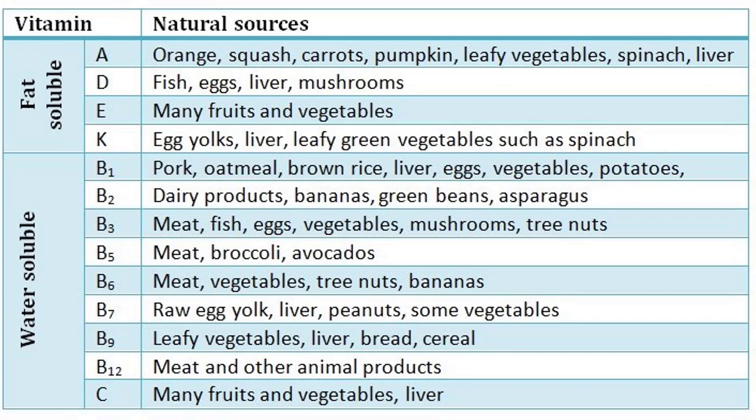Now, vitamin natural sources. It is difficult to remember everything in the table, but try to remember at least one or two sources so that you can eliminate wrong answers in the exam. Vitamin A is a fat soluble vitamin. Its natural sources are orange squash, carrots, pumpkin, leafy vegetables, spinach, and liver. Vitamin D natural sources are fish, egg, liver, and mushrooms.